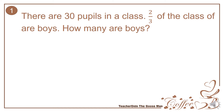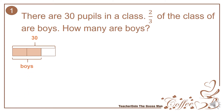Since we have the denominator 3, we will divide the entire class of 30 into 3 equal parts. But out of 3 parts, there are actually 2 parts for the boys. So there are 3 equal parts, which is equal to 30.